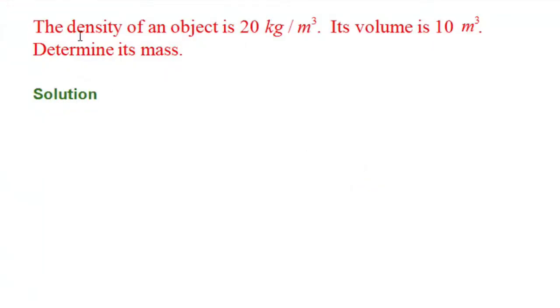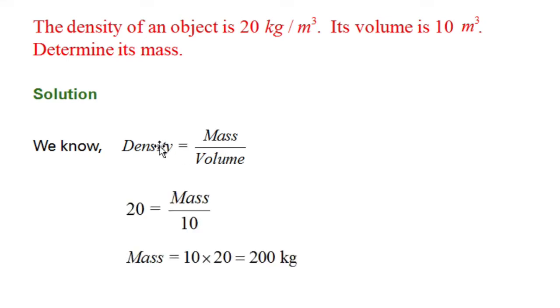In this example, density is given 20 kg per meter cube and the volume. But here also we will apply the same formula: Density equals mass divided by volume, and we will put the corresponding values. Density 20, mass we do not know, we will find out, volume 10. Therefore, mass is equal to density multiplied by volume, 10 into 20, 200. And since all the units are given in SI system, so mass is 200 kg.